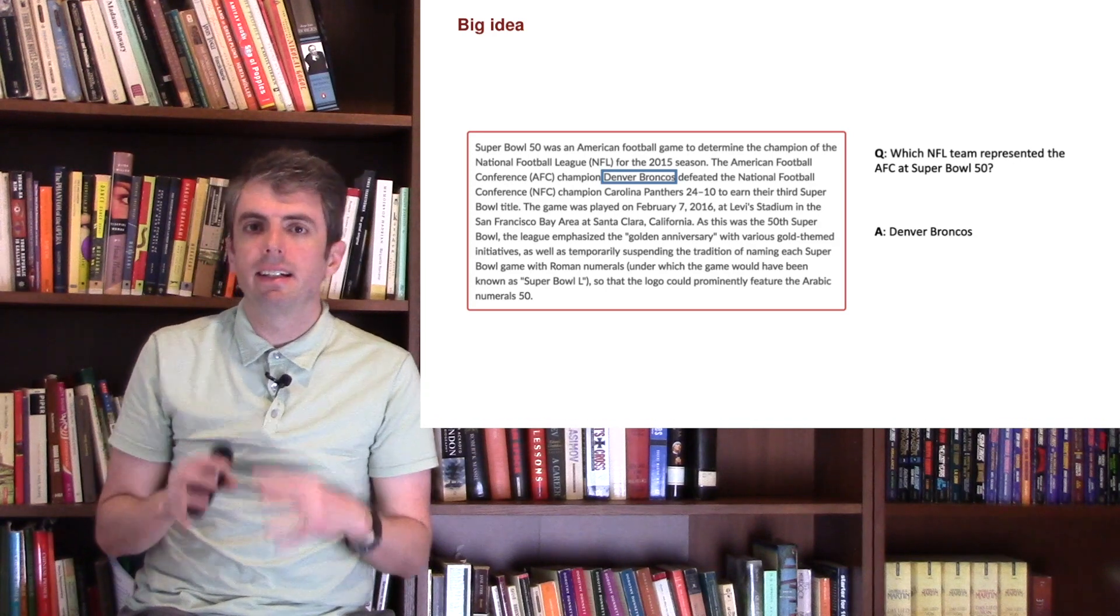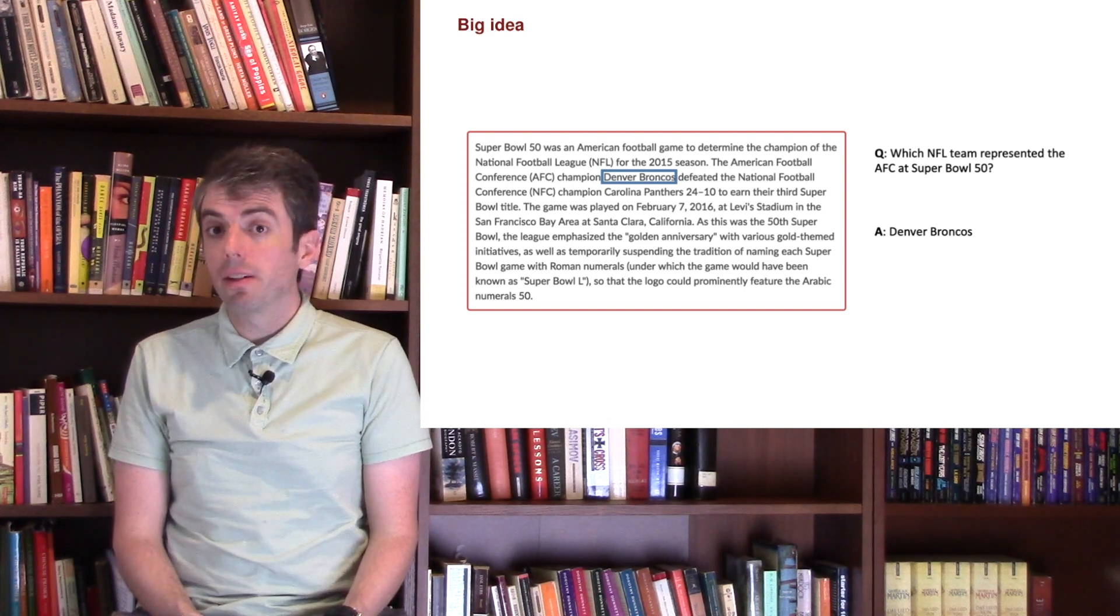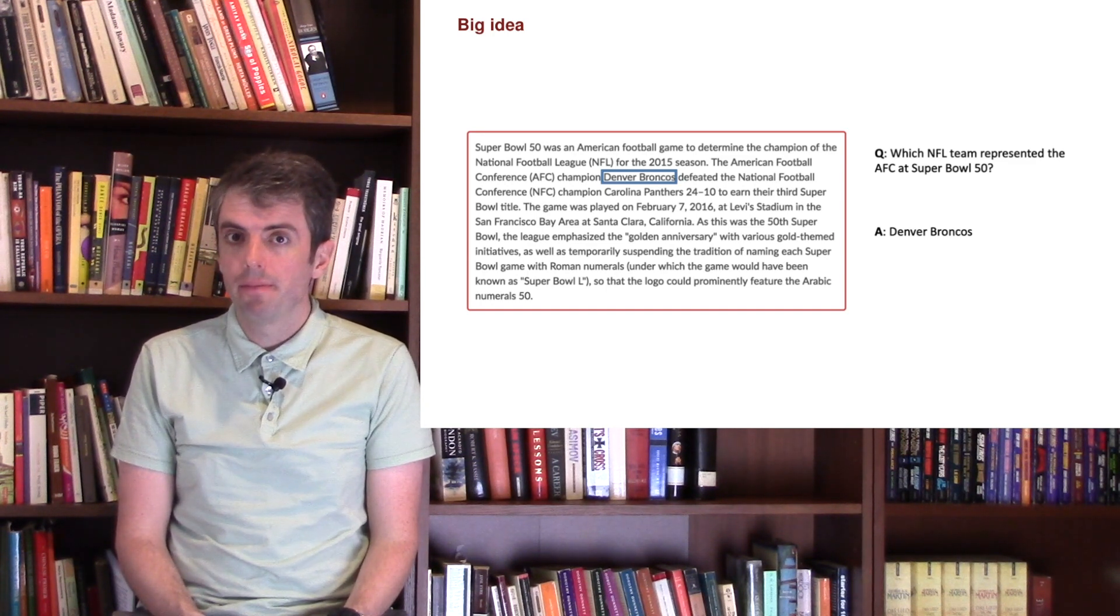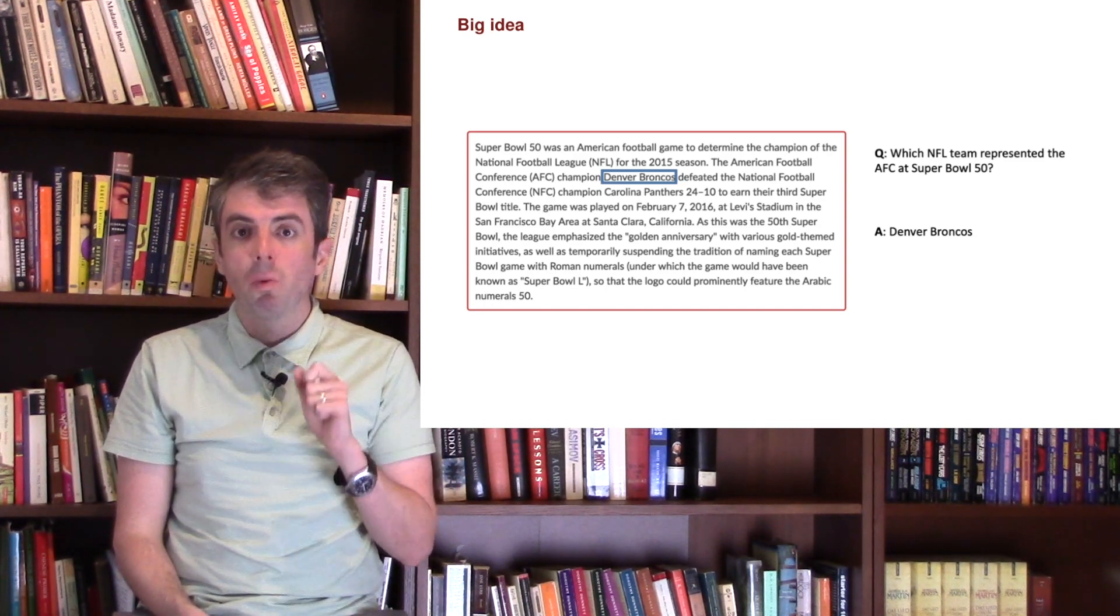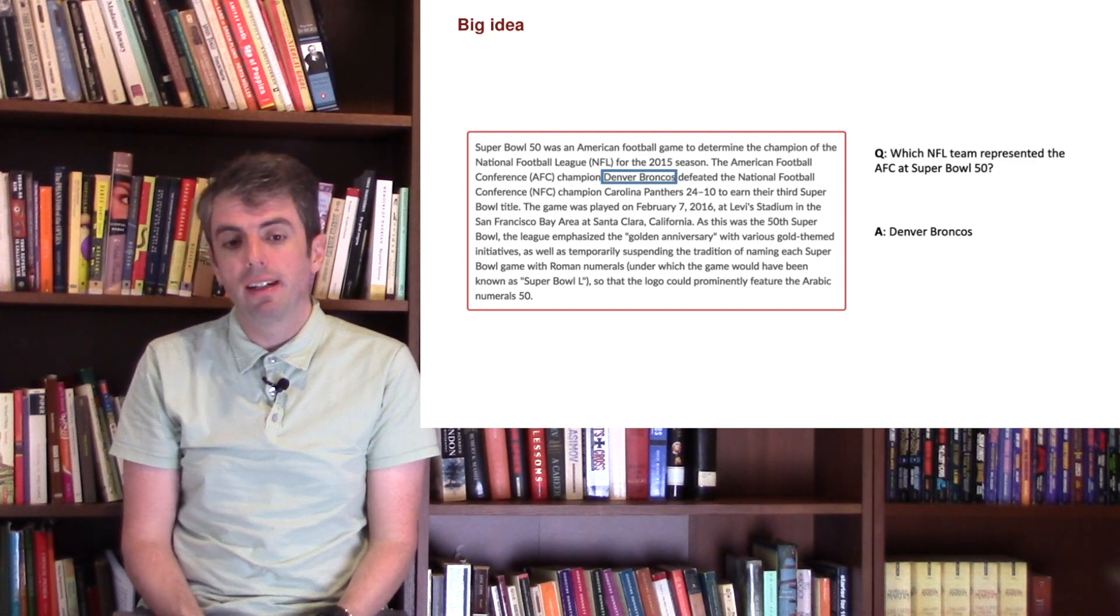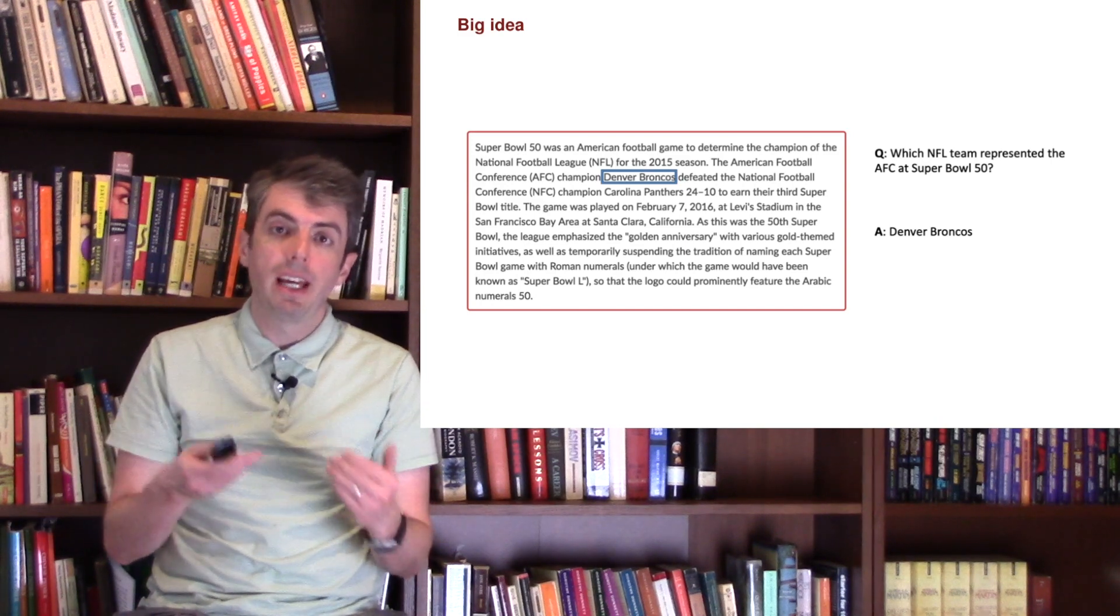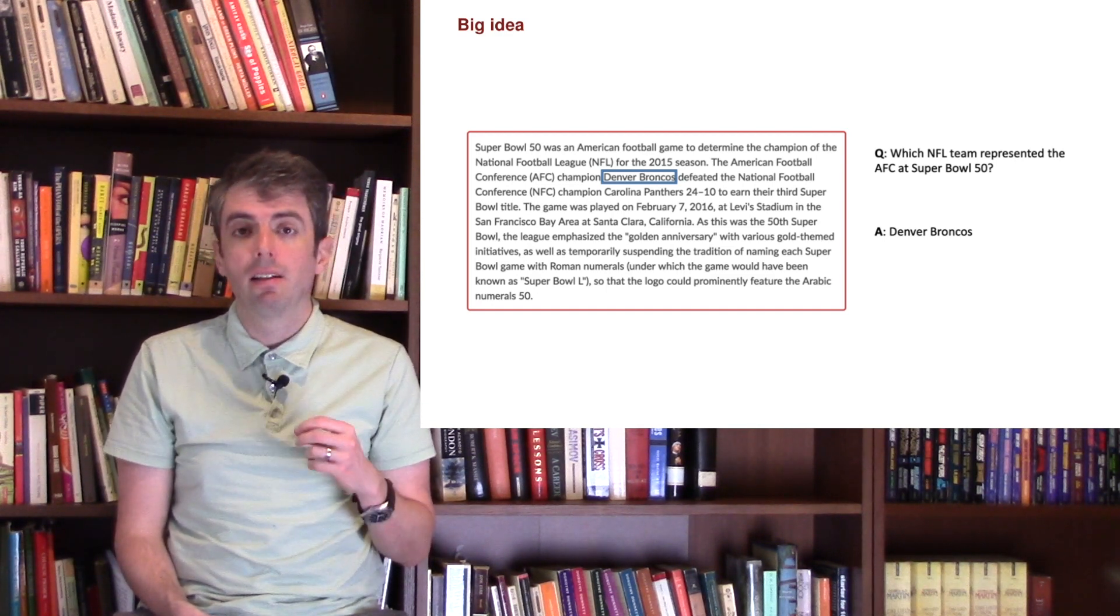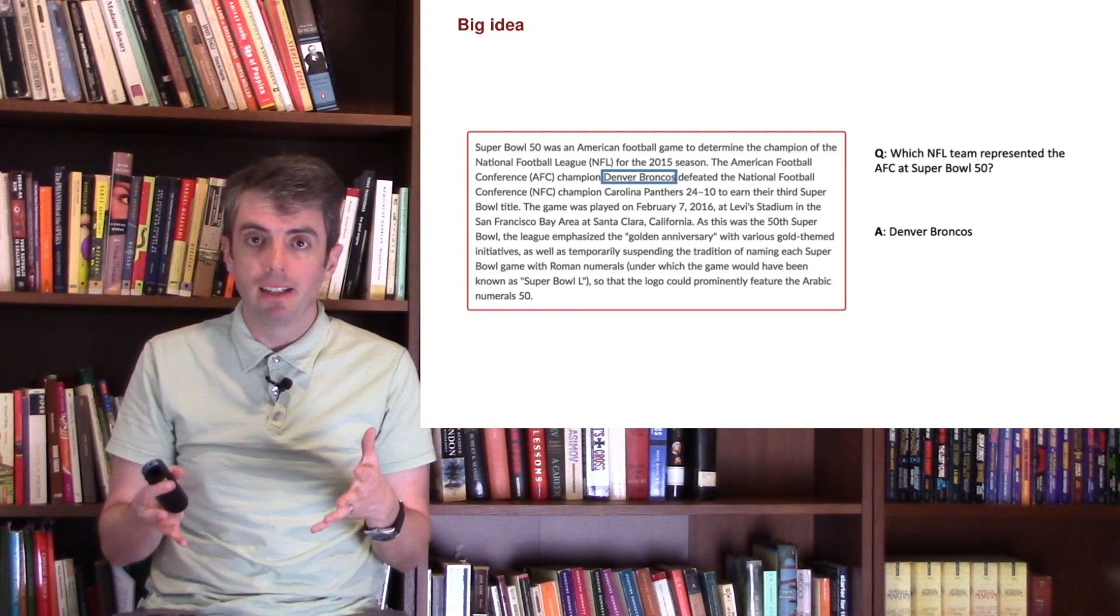So let's dig into the idea of a highlighter. Let's say that you're doing a reading comprehension test and you see the question: What team represented the AFC in Super Bowl 50? You have this question in your mind and you start reading through passages. What you want to do with your highlighter is highlight the phrase that answers the question, and in this case, it's the Denver Broncos. Thankfully, there are datasets that have exactly these question-answer pairs, such as SQUAD, and we can use that to train supervised machine learning systems that learn where an answer starts and ends, given a passage and a question.